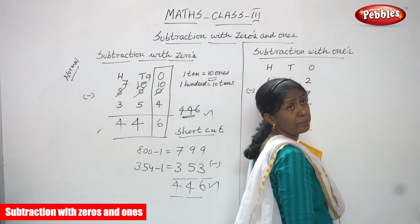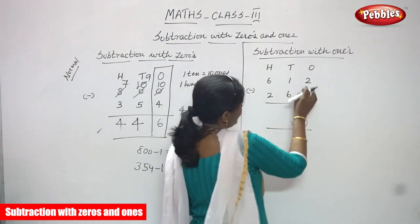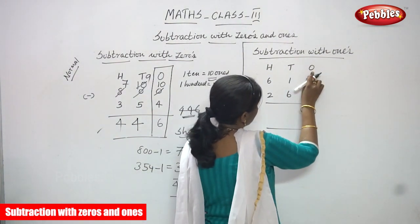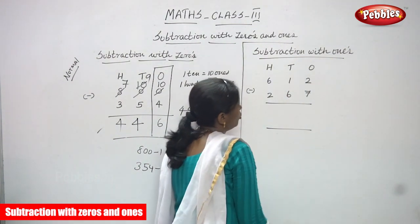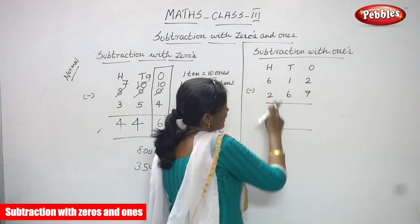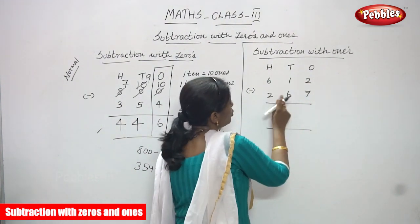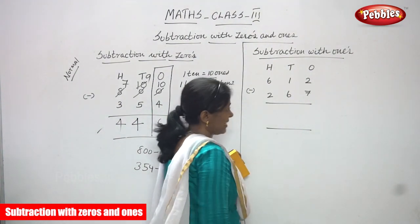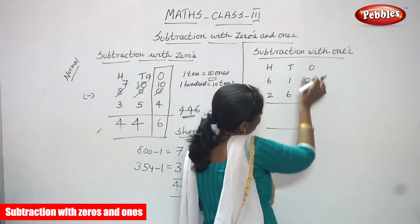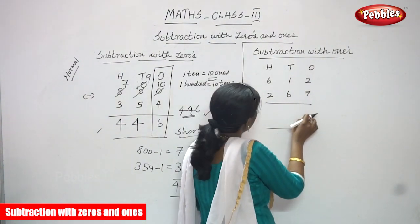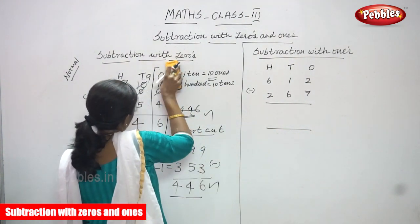Now we are going to do the subtraction with ones. So look at this. You are going to do this — ones, tens, and hundreds. First you have to write the place value, then you have to write the numbers: six, one, two — six hundred and twelve. Two, six, seven — two hundred and sixty-seven. Anyhow, first we have to concentrate only the ones.